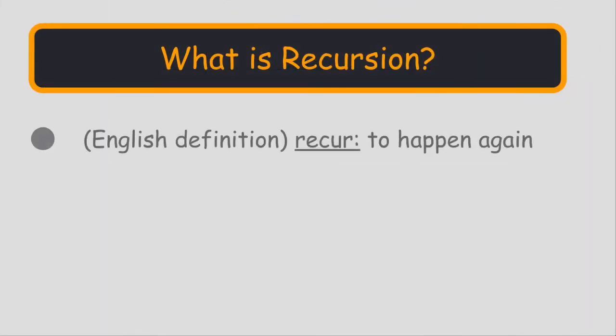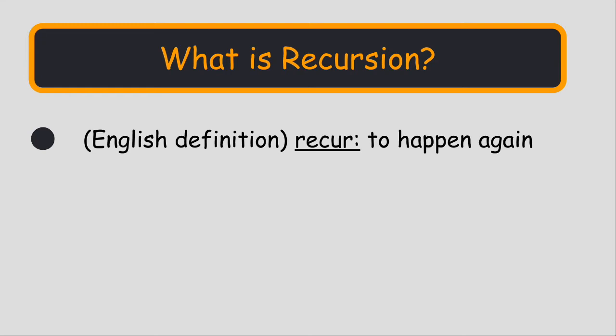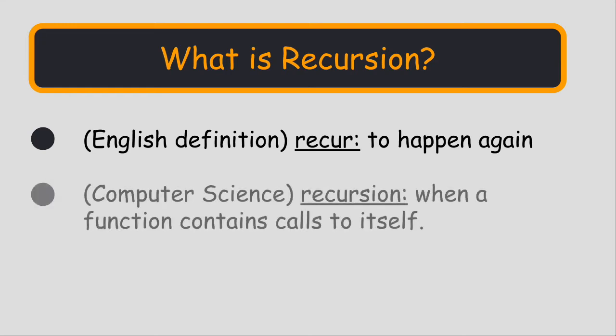In English, the word recur means to happen again. In computer science, recursion is a technique used to solve a problem in which a function calls itself. It might sound strange, perhaps like a snake eating its own tail, but it actually works.